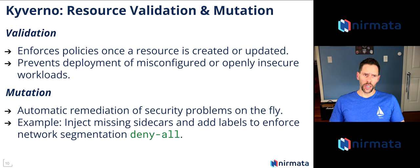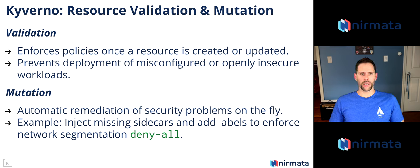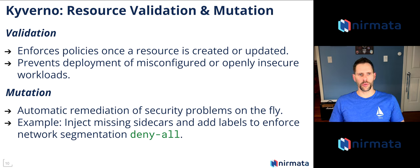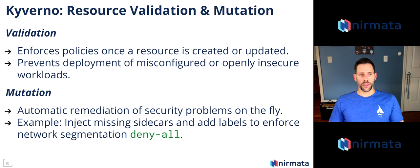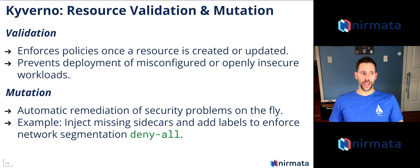Validation means we are enforcing policies on resources that are created or updated on the system, which means that no matter how many times you try to edit a deployment and misconfigure it, or edit a DaemonSet, StatefulSet, or any resource within a Kubernetes cluster, the policy will automatically deny those changes. On the other hand, we have mutation, which means that on the fly we can mutate existing resources. If you're missing sidecars, missing the Istio sidecar, or missing specific labels, or you want to create a deny-all network policy stance from the get-go and build from there, all of this can be done with a mutating webhook - all in a YAML file.